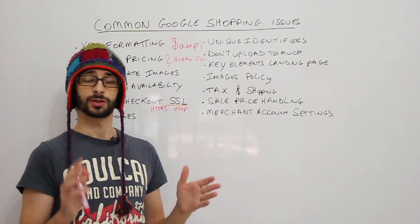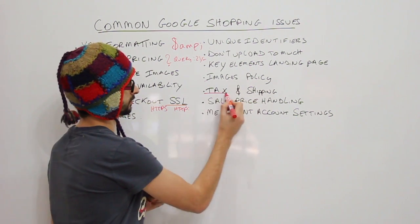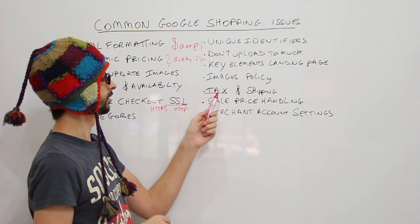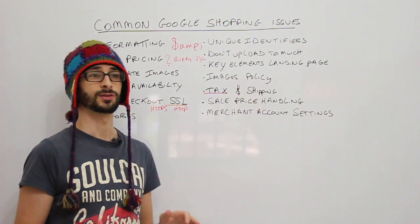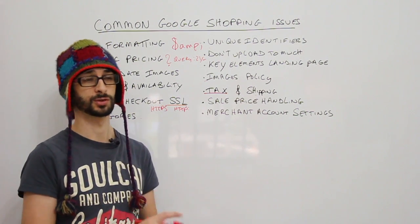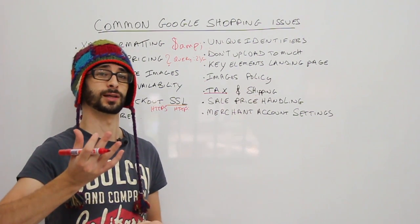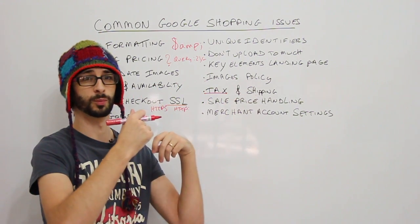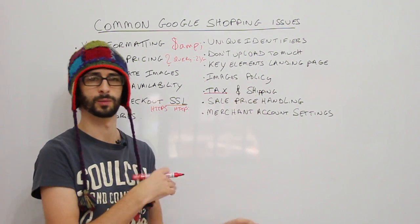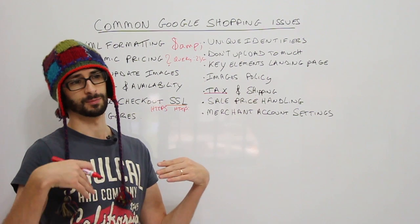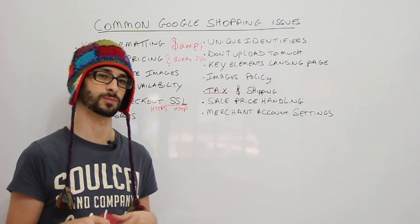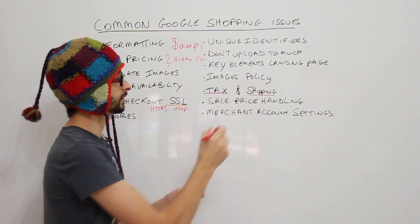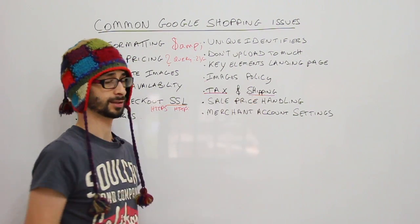Ensure that tax and shipping are set up. In the US, tax is very important and needs to be entered either at the product level in the data feed or in the merchant account settings — the same applies to shipping. If you set a shipping price at the account level, such as five pounds, but then add a different shipping price on a specific product in the data feed, that will override your merchant account setting. Outside the US, shipping must be configured; in the US, both tax and shipping need to be entered.